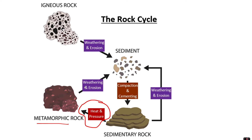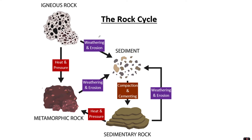That metamorphic rock could then undergo weathering, turn into sediment, and turn back into a sedimentary rock — a little cycle right there. Similarly, if igneous rock didn't undergo weathering, it could undergo heat and pressure, and those conditions will again make a metamorphic rock.